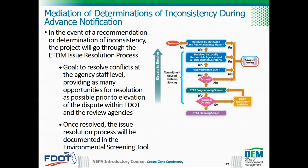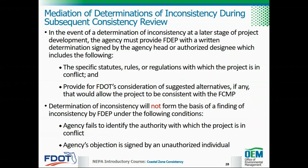If a state agency determines that a project is inconsistent at a later stage of project development, the agency must provide FDEP with a written determination signed by the agency head or authorized designee, which includes: number one, the specific statutes, rules, or regulations with which the project is in conflict; and number two, suggested alternatives, if any, that would allow the project to be consistent with the Florida Coastal Management Program. Where an agency fails to identify the authority with which the project is in conflict, or the agency's objection is signed by an unauthorized individual, the determination will not form the basis of a finding of inconsistency by FDEP, the lead coastal management agency.